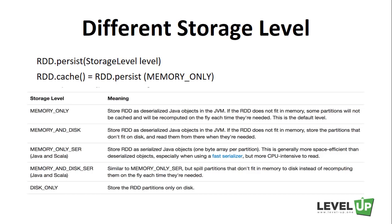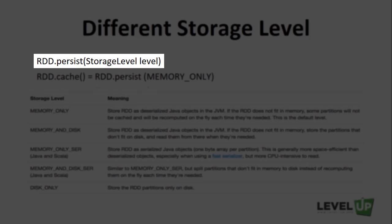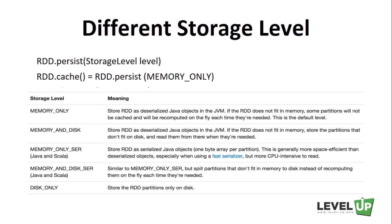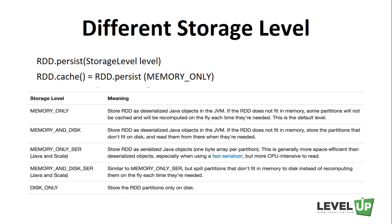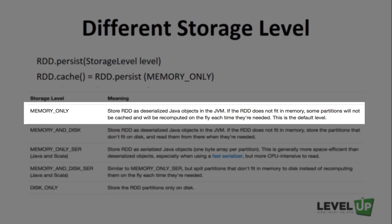Each persisted RDD can be stored using a different storage level, allowing you to persist the dataset on disk or in memory. These levels are set by passing a storage level object to the persist method. The cache method is a shorthand for using the default storage level, which is memory-only. For the memory-only storage level, the RDD is stored as deserialized Java objects in memory. If the RDD can't fit into memory, some partitions won't be cached and will be recomputed on the fly each time they're needed.